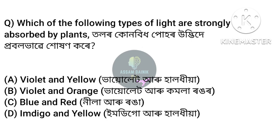Which of the following types of light are strongly absorbed by plants? Option C: Blue and red.